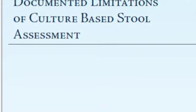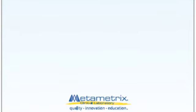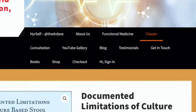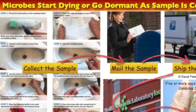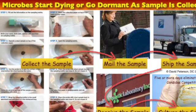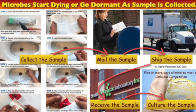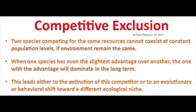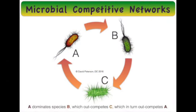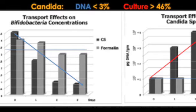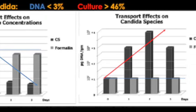My analysis is highly influenced by Dr. Lord's paper, 'The Documented Limitations of Culture-Based Stool Assessments,' written when he was at Metametrics. Unfortunately this paper has been disappeared, but it is available on my website in PDF format. During transportation from the patient's home to the lab, competitive exclusion kicks in — this occurs when two species competing for the same resources cannot coexist, because most bacteria are killed or go dormant during transportation. Candida is the only one to survive, and can out-compete its competition in the incubator at the lab.